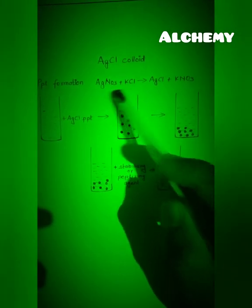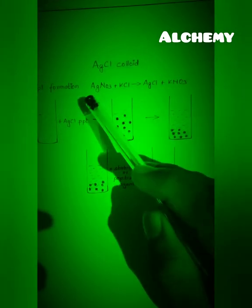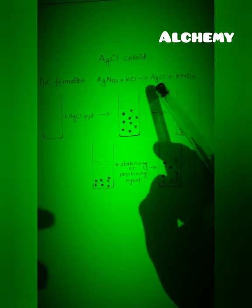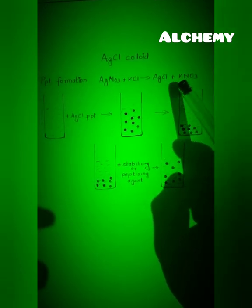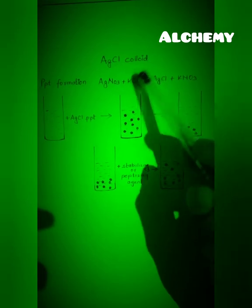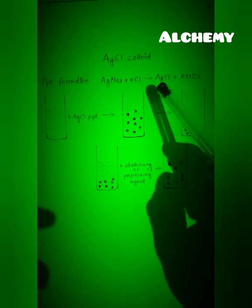This is the equation to prepare AgCl precipitate. Silver nitrate plus potassium chloride gives silver chloride plus potassium nitrate. So here we have got this AgCl precipitate.